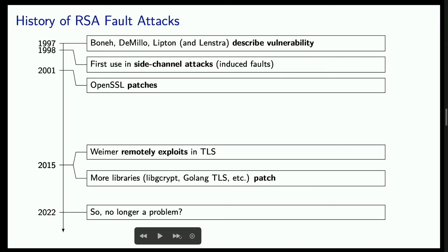While OpenSSL patched back in 2001, Weimer's work spurred a number of other libraries to patch their implementations. Now we're in 2022 — this vulnerability has been known for 25 years and most of the major libraries have patched. So this should be a solved problem.